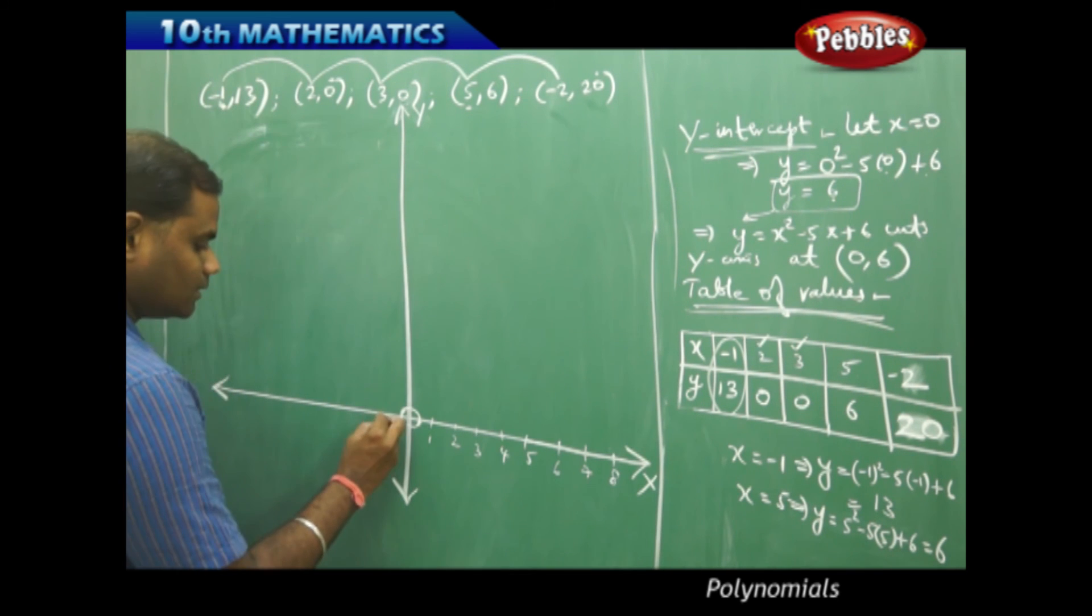Then, in the negative side, I get minus 1, minus 2, minus 3, minus 4, minus 5, minus 6, minus 7, minus 8, so on and so forth.